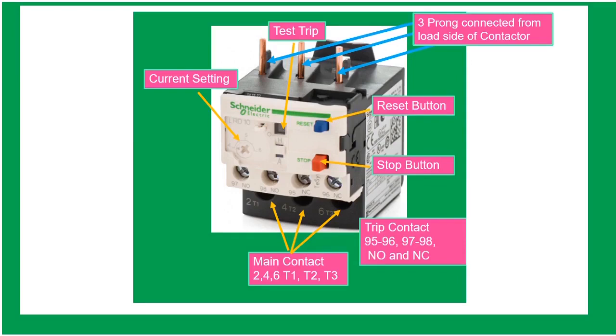Parts of overload relay. Current setting. To set the current setting of the motor, you need to know the full load current and multiply it with 1.25 or 125%. Stop button used to stop the motor. Reset button. Manual reset should be done after the motor has tripped.